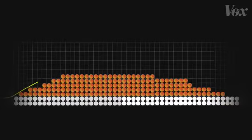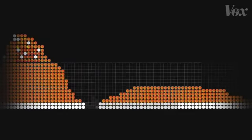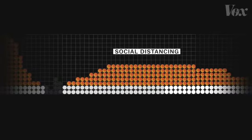This trend line gets flatter. These people can all get treatment, and fewer people die because of it. These are the two ways the COVID-19 pandemic can play out. But this one only happens if everyone does their part.